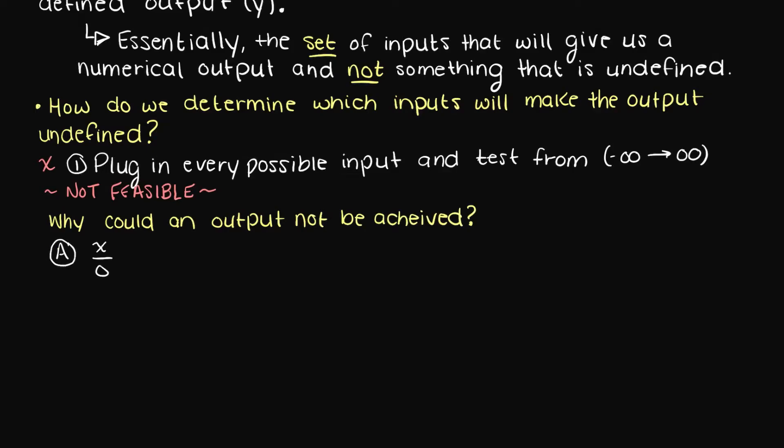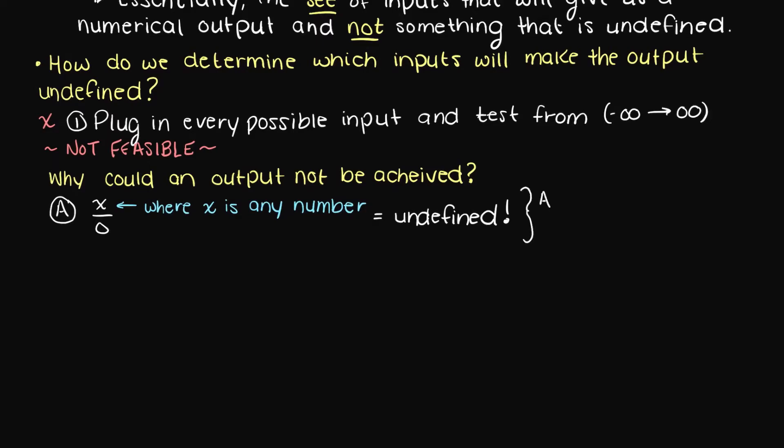Firstly, what if we had any number divided by zero? Well, that's undefined and not a proper output, so let's write that down as the first reason why an output could not be achieved.